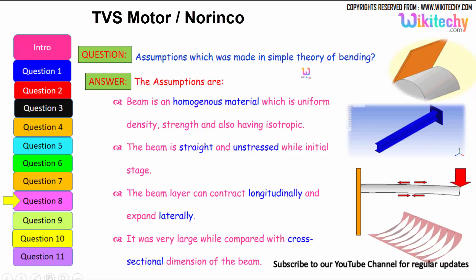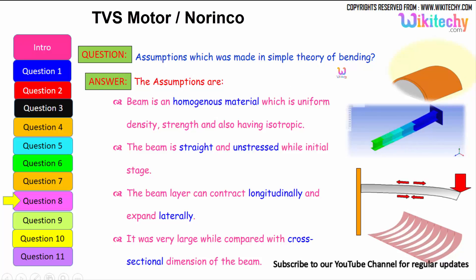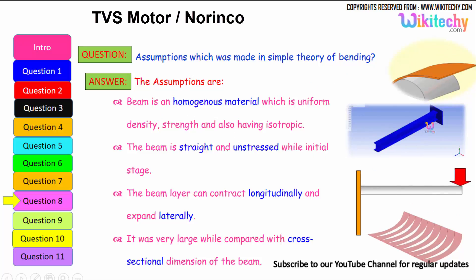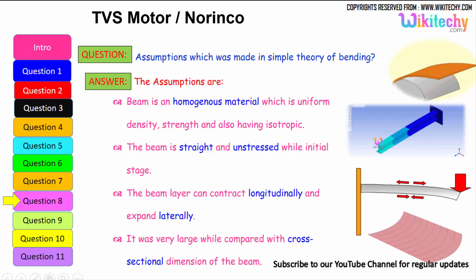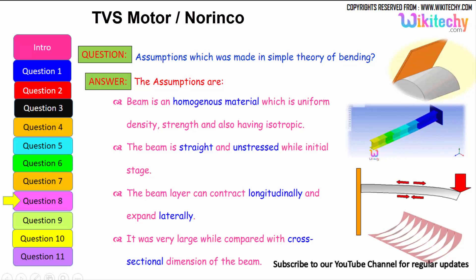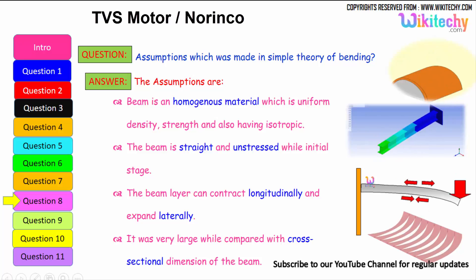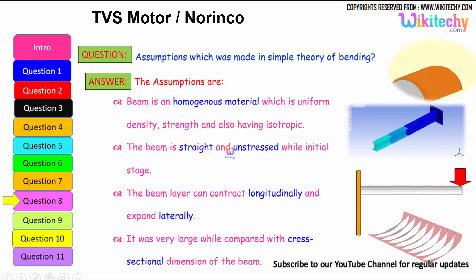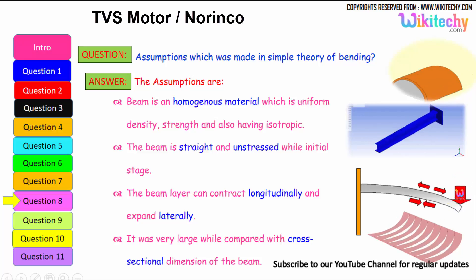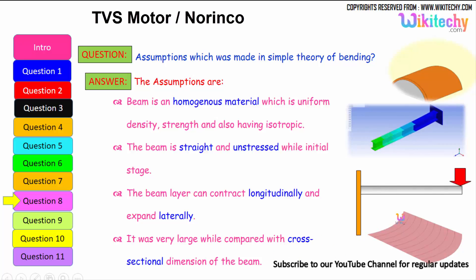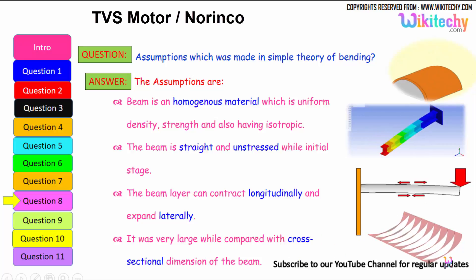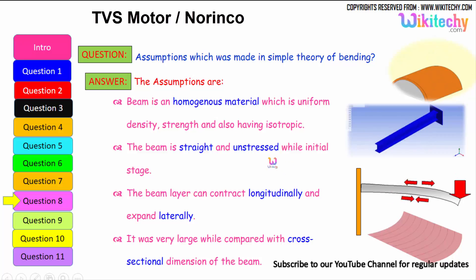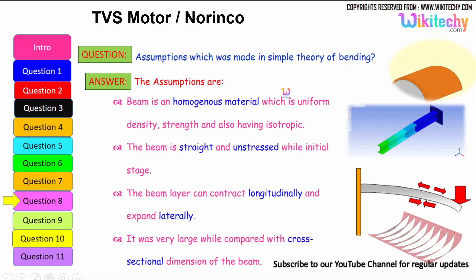What are the assumptions made in the simple theory of bending? The assumptions are: the beam is made of a homogeneous material with uniform density, uniform strength, and is isotropic. The beam is straight and unstressed in its initial stage. The beam can contract longitudinally and expand laterally. The beam's length is very large compared to its cross-sectional dimensions.